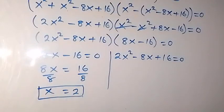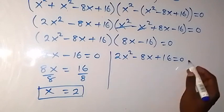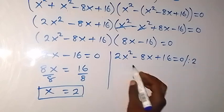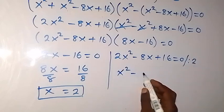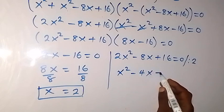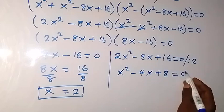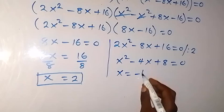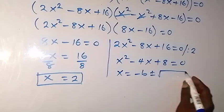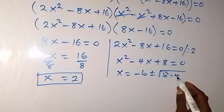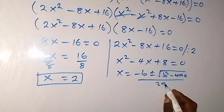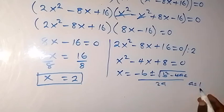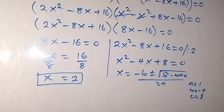On the other side we have a quadratic equation. Dividing through by 2 gives x squared minus 4x plus 8 equals 0. We solve this using the quadratic formula: x equals negative b plus or minus square root of b squared minus 4ac, all over 2a. Here a equals 1, b equals negative 4, and c equals 8.